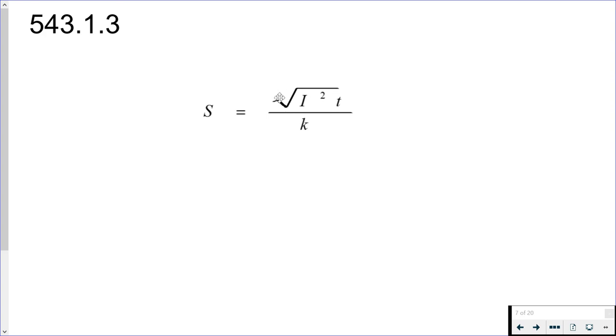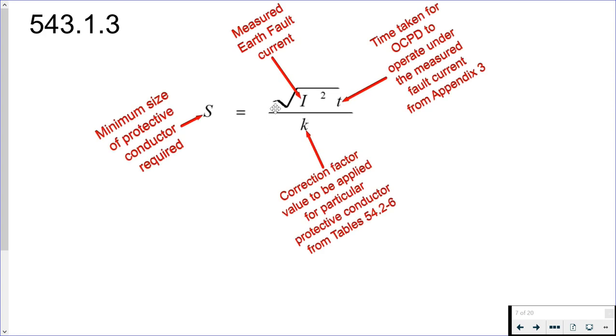The calculation method identifies this adiabatic equation. The key tells you that S is the minimum size of protective conductor that's required. I is the measured fault current. T is the time that it takes the overcurrent protective device, in this instance the fuses that are in the service head, to operate with this fault current flowing. And then K, well that's a correction factor that we apply depending upon the type of protective conductor, and we find that correction factor from tables 54.2 all the way through to table 54.6.